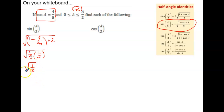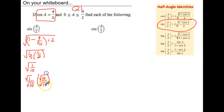When you have a square root of a fraction, that's equivalent to the square root of the numerator over the square root of the denominator. We're going to rationalize that denominator by multiplying the top and bottom by root 10. That simplifies to root 10 over 10, and that is the sine of our angle over 2.